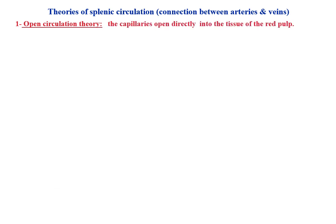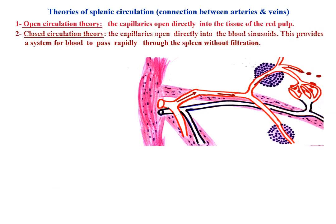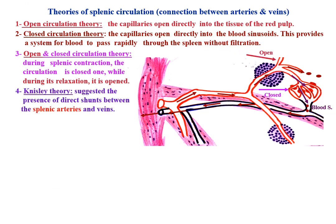Theories of splenic circulation — connection between arteries and veins. Open circulation theory: the capillaries open directly into the tissue of the red pulp. Closed circulation theory: the capillaries open directly into the blood sinusoids, providing a system for blood to pass rapidly through the spleen without filtration. Open and closed circulation theory: during splenic contraction, the circulation is a closed one, while during relaxation, it is an open one. Kinsley theory suggested the presence of direct channels between the splenic arteries and veins.